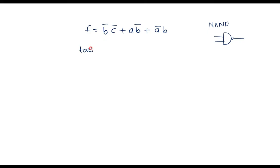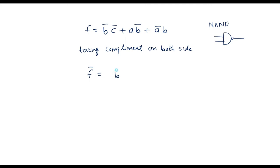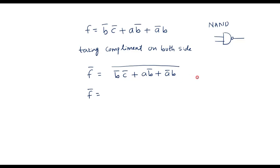Let me take the complement on both sides. Taking complement on both sides, f̄ is equal to (b̄c̄ + ab̄ + āb) complement. That is, I have taken complement on both sides. So now let me simplify this — f̄ is equal to, now by applying De Morgan's theorem.